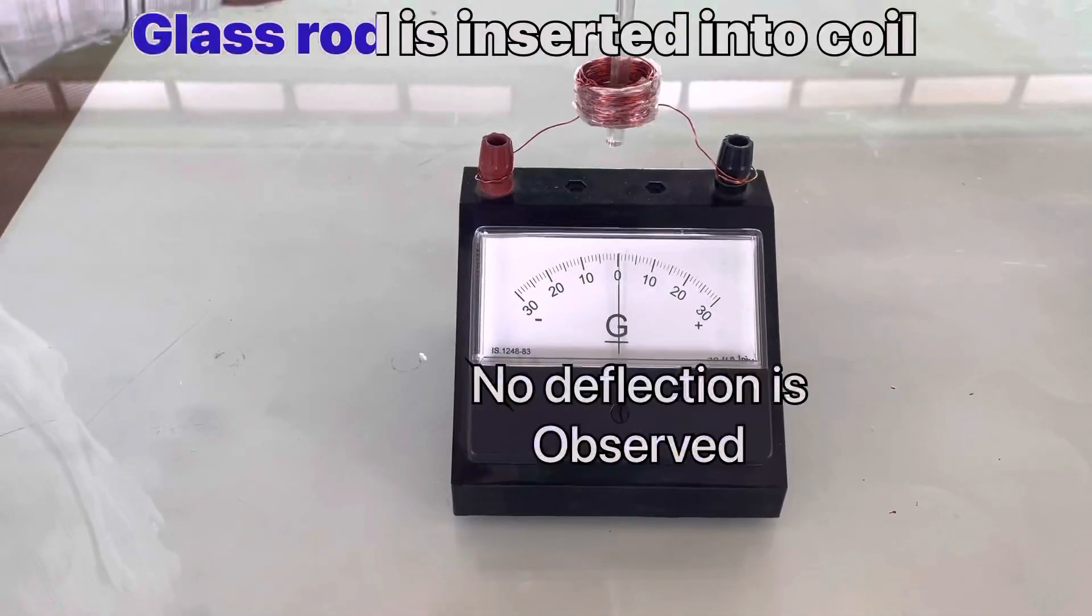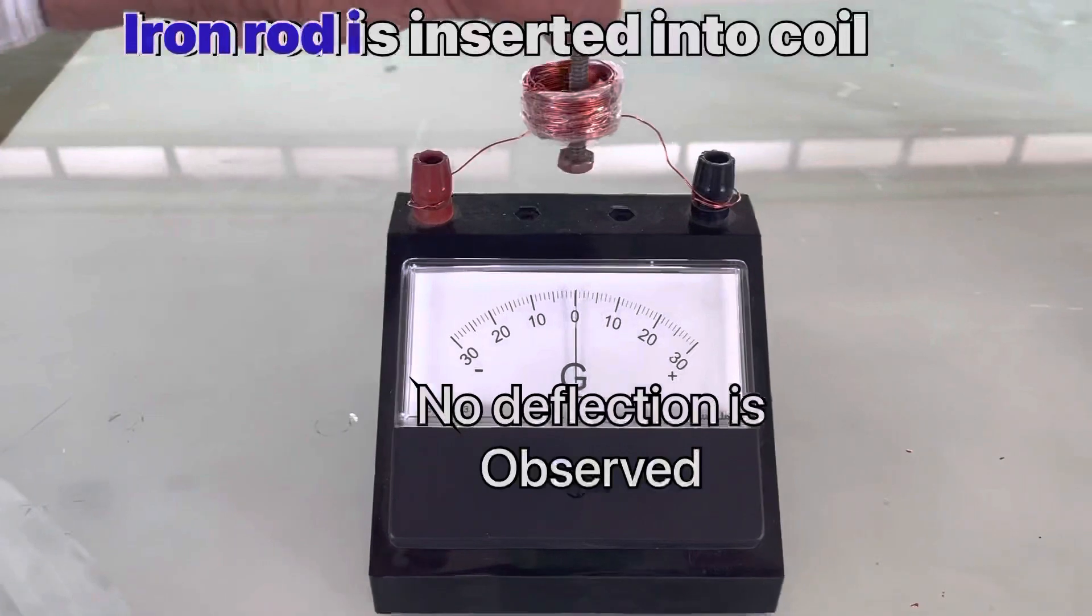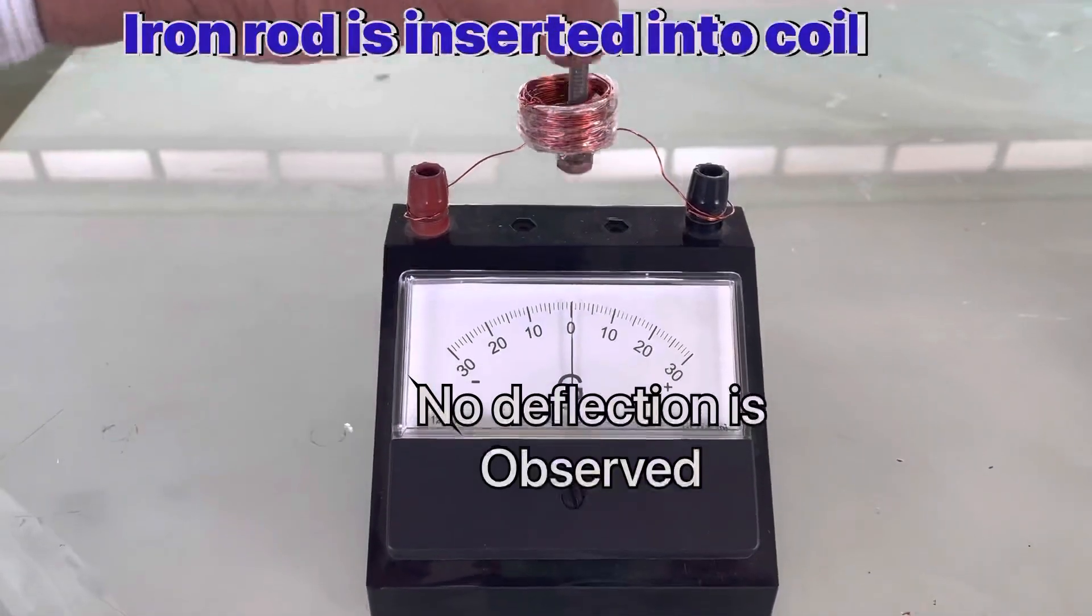A glass rod is inserted into the coil. No deflection is observed. Similarly, an iron rod is inserted into the coil. No deflection is observed.